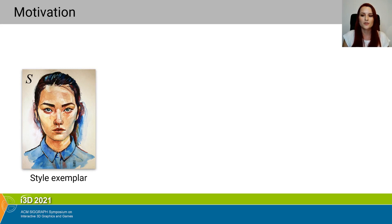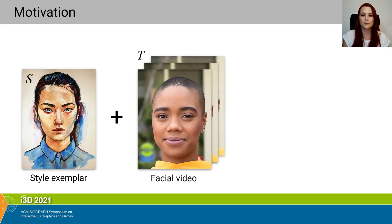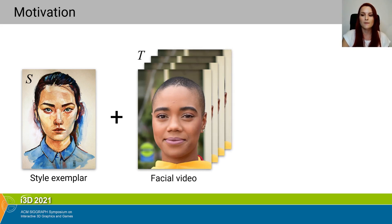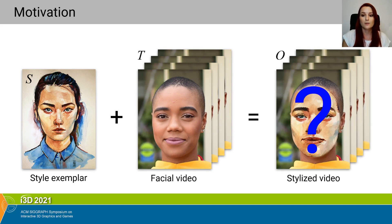Imagine we have a style exemplar image of a human portrait and a target facial video. We want to paint this sequence in the given style. But how to do it efficiently?